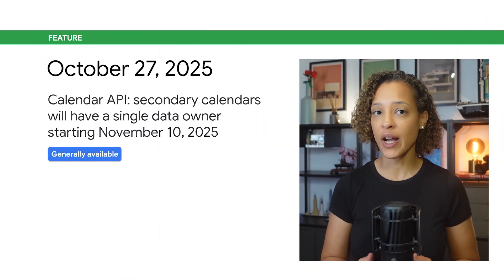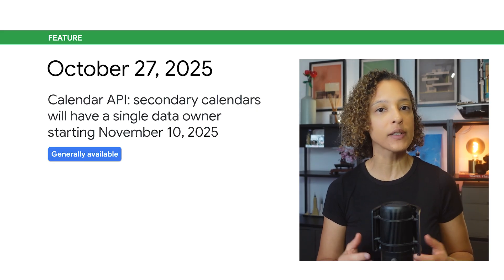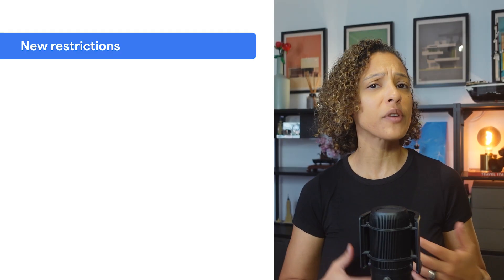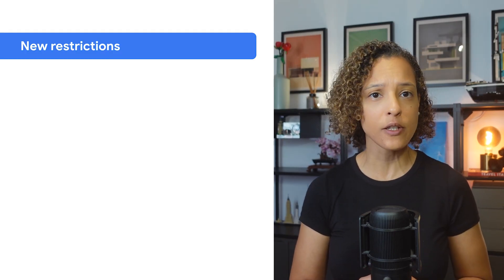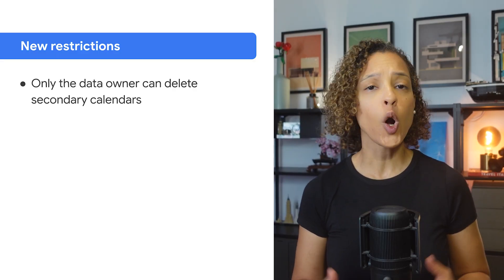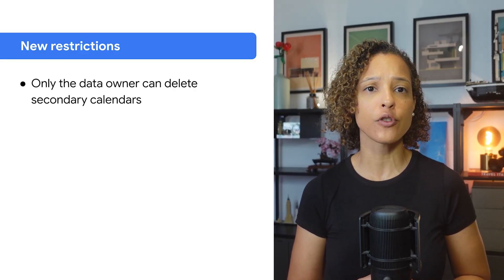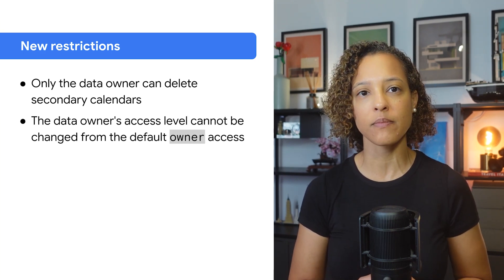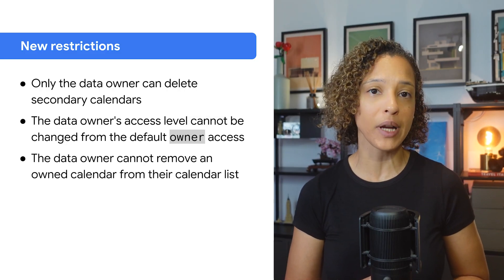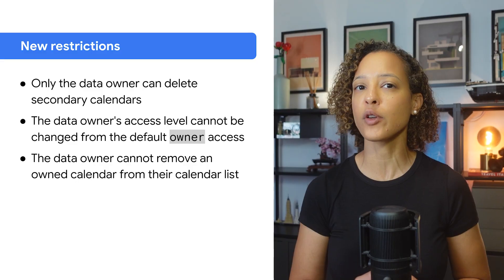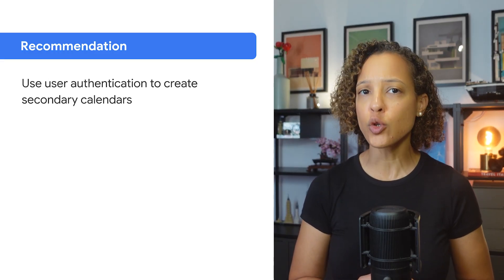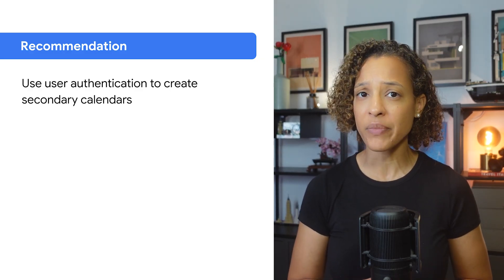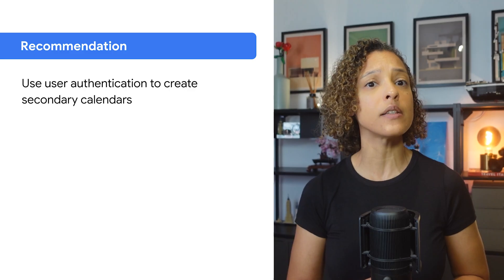Starting November 10th, 2025, secondary calendars will have a single data owner. This applies to both existing and newly created calendars. To prevent unintended actions and undesired states, the following new restrictions apply: only the data owner can delete secondary calendars; the data owner's access level cannot be changed from the default owner access; and the data owner cannot remove an owned calendar from their calendar list, though they can hide it from their UI. We recommend that you use user authentication to create secondary calendars. When a new secondary calendar is created, the authenticated user that makes a request is the data owner.